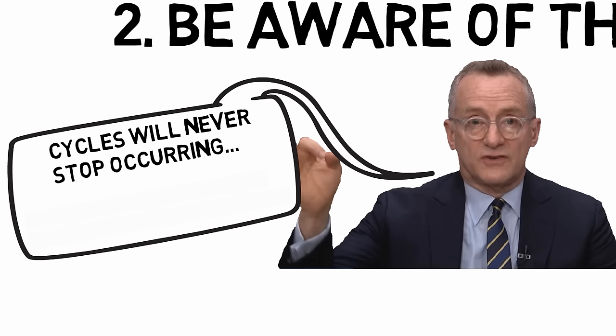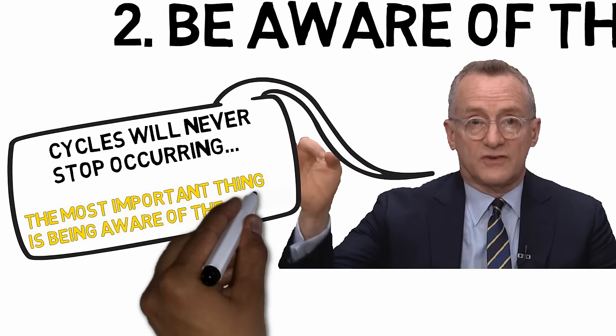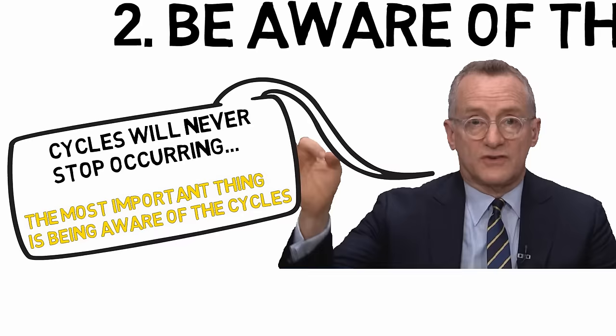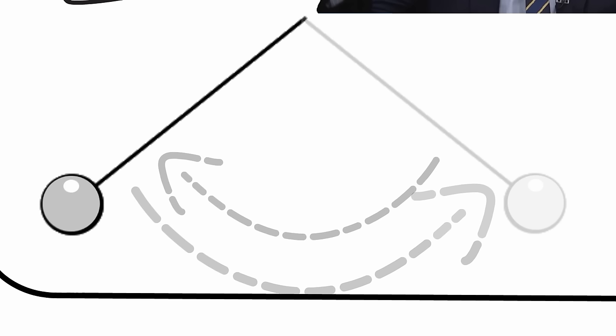The most important thing is being aware of the cycles, as it's a tool that gives you an edge towards the market. Howard Marks compares the market to a pendulum that swings from one side to the other. The extremes are the turning points at each end. Although the midpoint of its arc best describes the location of the pendulum on average, it spends very little time there.